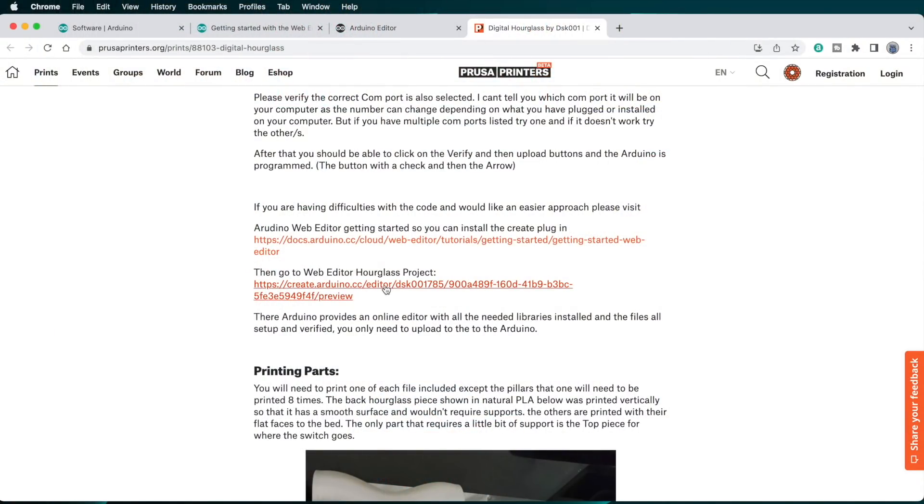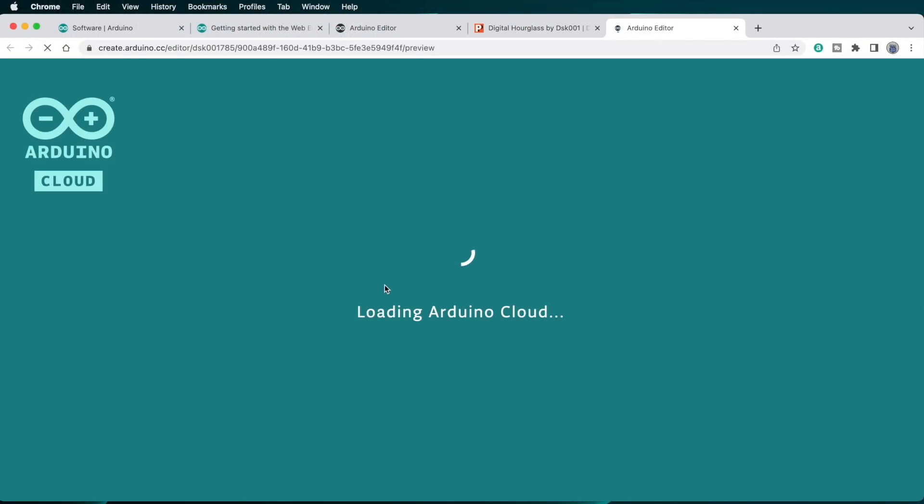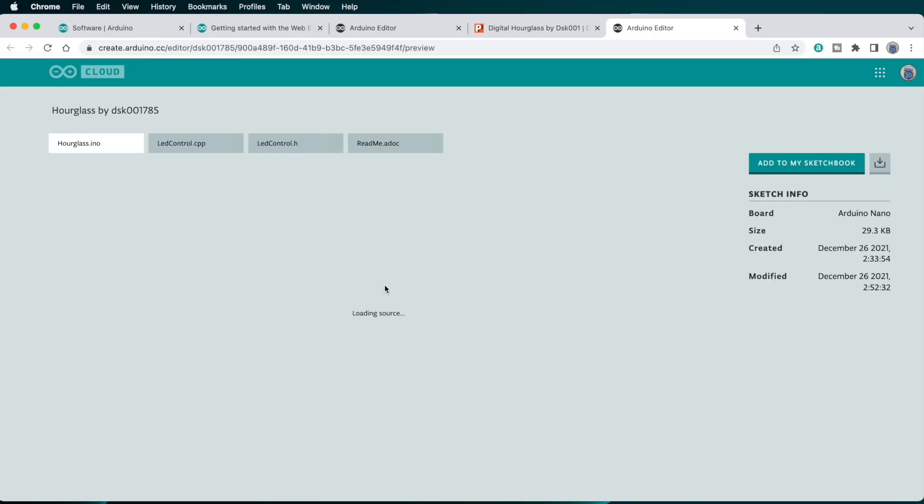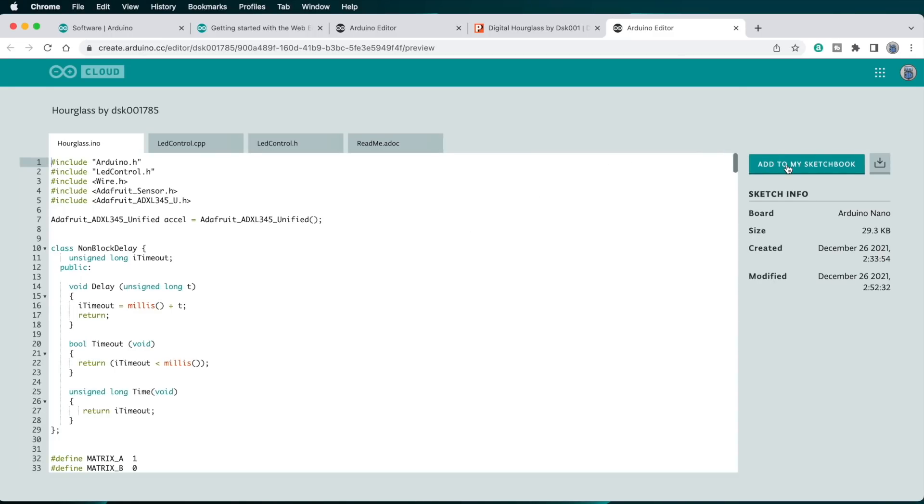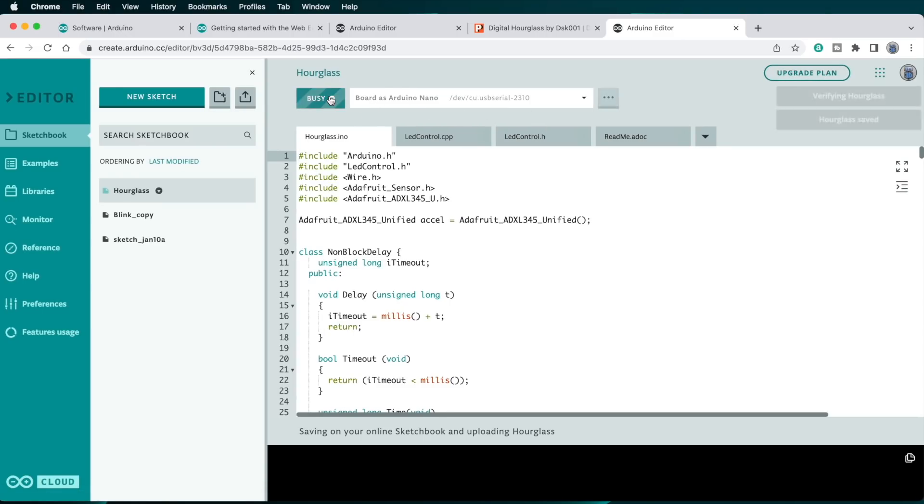That link takes you to Fernando's hourglass sketch, and there's a big friendly add to my sketchbook button that'll do exactly what it says. Go on, give it a click. It takes a few seconds, but once it's added, you can upload it to your Nano.